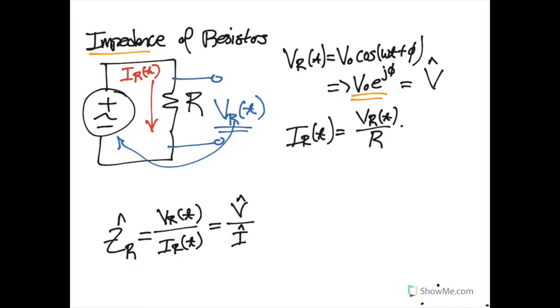So it's pretty straightforward to say that this right here, if I take the previous phasor representation, is the current phasor through the resistor. And so this function right here will be I hat.